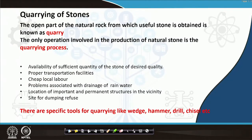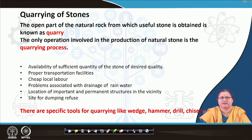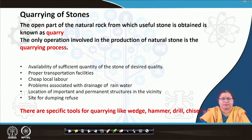The open part of a natural rock from which useful stone is obtained is called a quarry, and the operation involved in the production of natural stone is called quarrying. There should be availability of sufficient stone; otherwise there is no point in that long exercise. Proper transportation facility should be there, as you have to carry the stone from the quarry back to your site, and also require heavy machinery to reach there and do the operations.